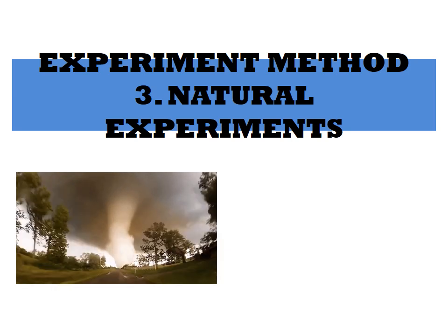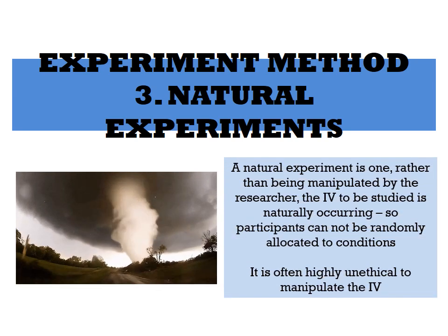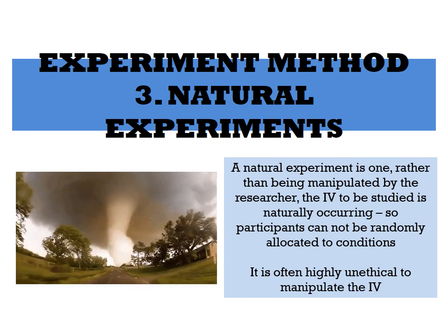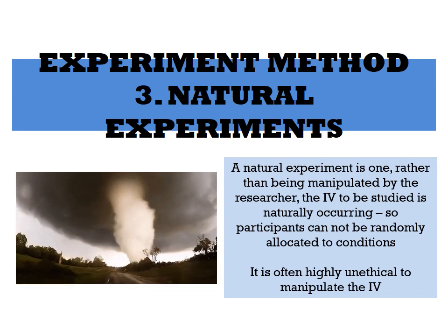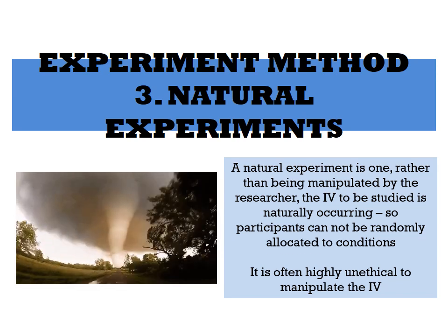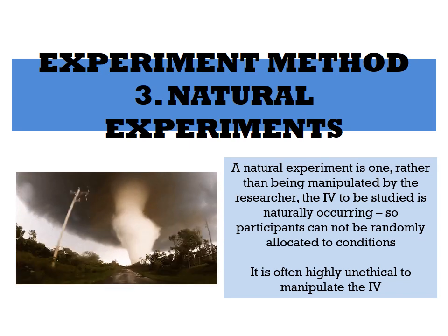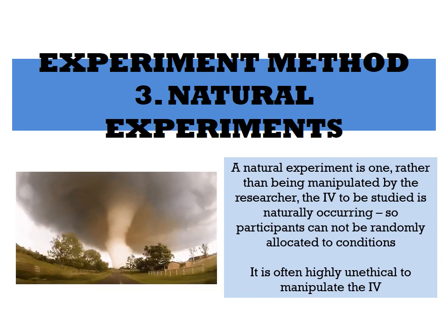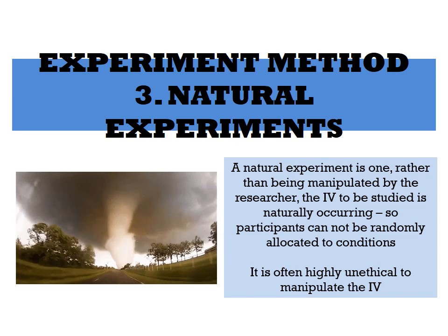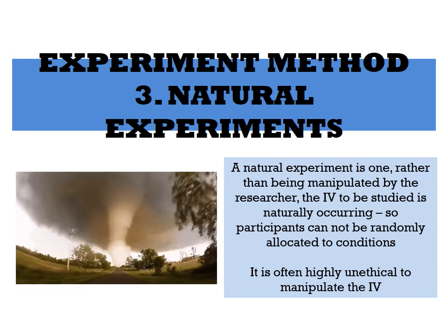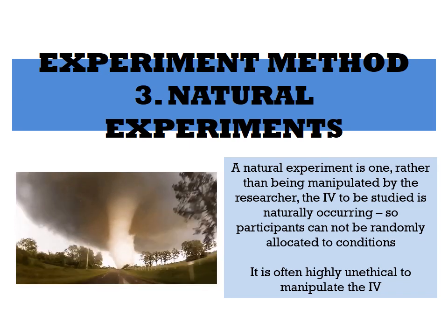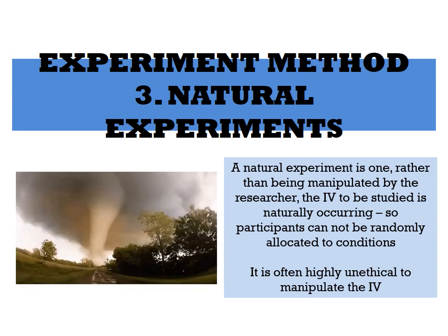The next experimental method is natural experiments. A natural experiment is one where the independent variable is naturally occurring rather than being manipulated by the researcher, so participants can't be randomly allocated to conditions. For example, a researcher studying the development of adopted children compared to non-adopted children — whether or not they had been adopted were naturally occurring independent variables that had already happened.